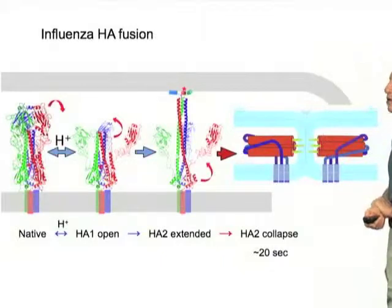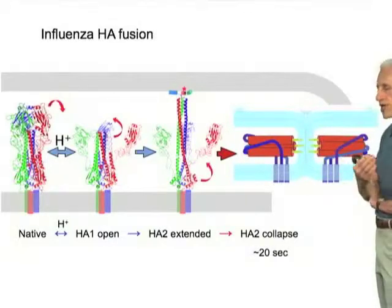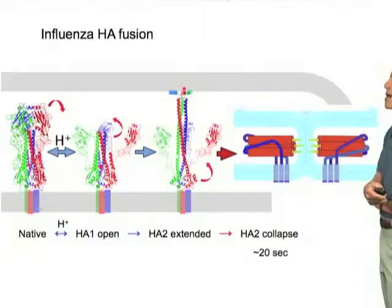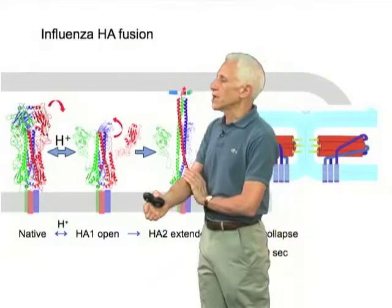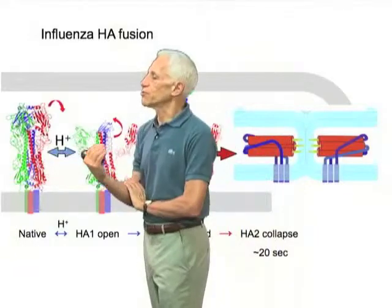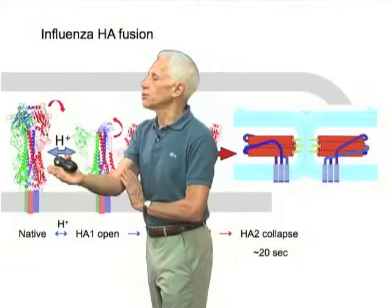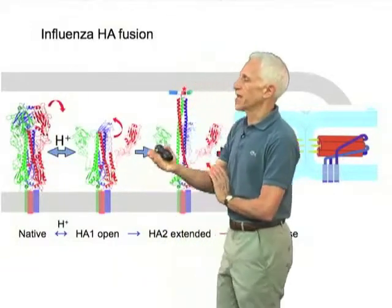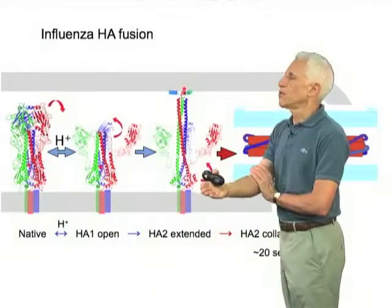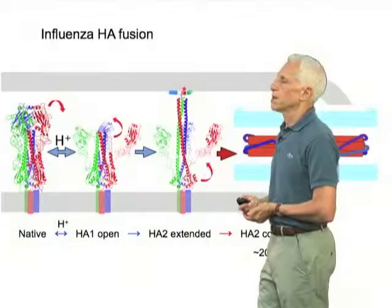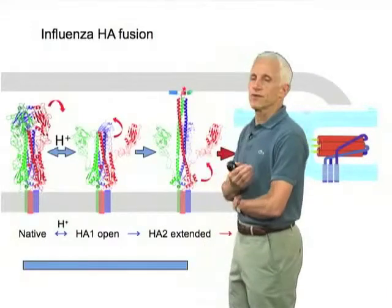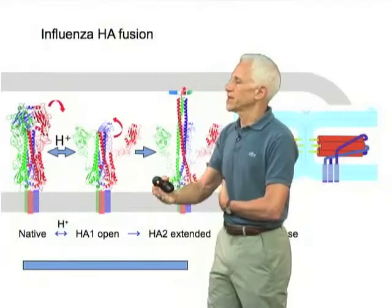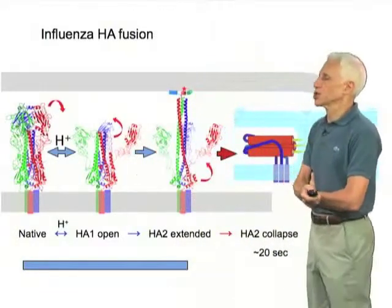Which of the various steps in this sort of scheme is the rate-limiting step in this sort of analysis? From the pH dependence, we believe that there's an initial rapid equilibrium between a protonated and unprotonated state, but that as soon as this extended intermediate forms, the process is essentially irreversible. And indeed, as a result of looking at some variants of the hemagglutinin, we're pretty convinced that it is this step that, in the measurements I just showed you, we're looking at.